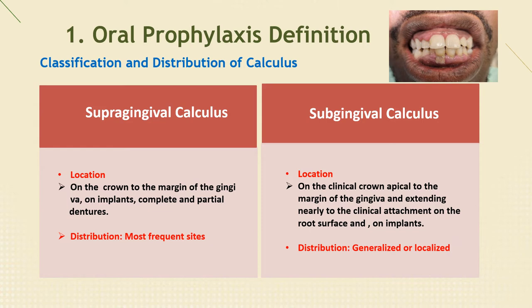Supragingival calculus also forms on the crowns of teeth out of occlusion, non-functioning teeth, or teeth that are neglected during daily biofilm removal — tooth brushing, flossing, or other personal care — and on surfaces of dentures and dental appliances. Second, subgingival calculus: distribution may be generalized or localized on single teeth or a group of teeth. Heaviest deposits are related to areas most difficult for the patient to access during personal oral biofilm removal procedures.